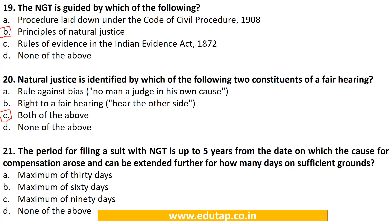MCQ 21: The period for filing a suit with NGT is up to 5 years from the date on which the cause for compensation arose, and can be extended further for how many days on sufficient grounds? A. Maximum 30 days, B. Maximum 60 days, C. Maximum 90 days, D. None of the above. The correct answer is B. Maximum of 60 days.